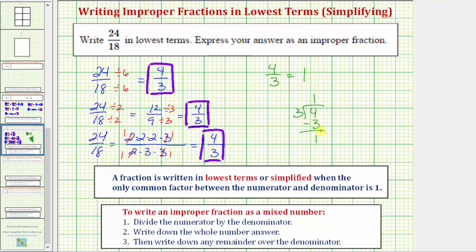So this tells us that four-thirds is equal to one whole from the quotient, and then to form the fraction part of the mixed number, we write the remainder over the denominator, which is also the divisor. So four-thirds equals one and one-third.